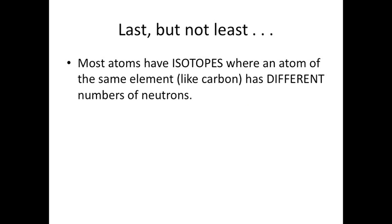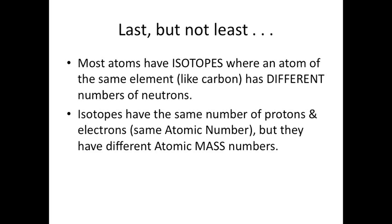Last but not least, you need to know that most atoms have isotopes, where an atom of the same element, like carbon, has different numbers of neutrons. Isotopes have the same number of protons and electrons. They won't change the atomic number, but they have different atomic mass numbers.